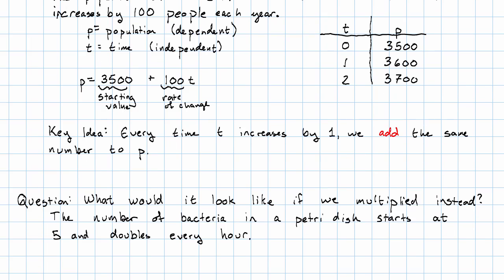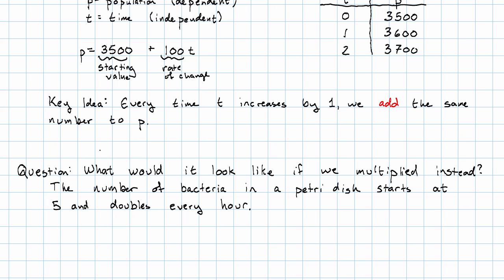An example of a situation that calls for that is where we have bacteria in a petri dish. A petri dish is a little thing that you use in biology experiments to grow bacteria. The number of bacteria in a petri dish starts at 5 and doubles every hour.